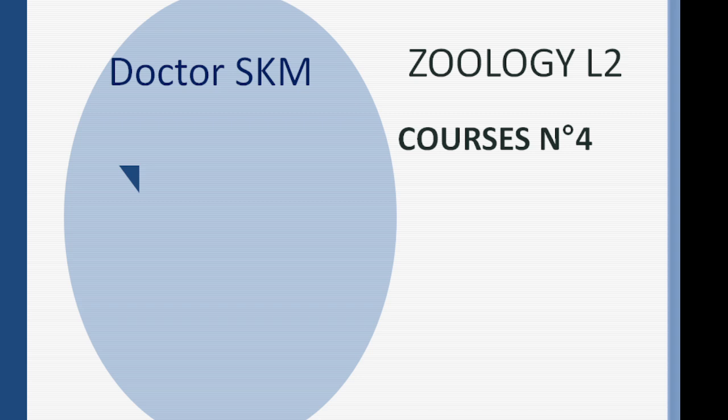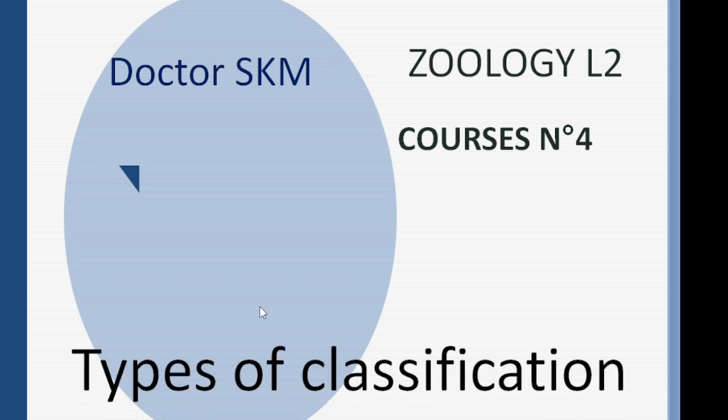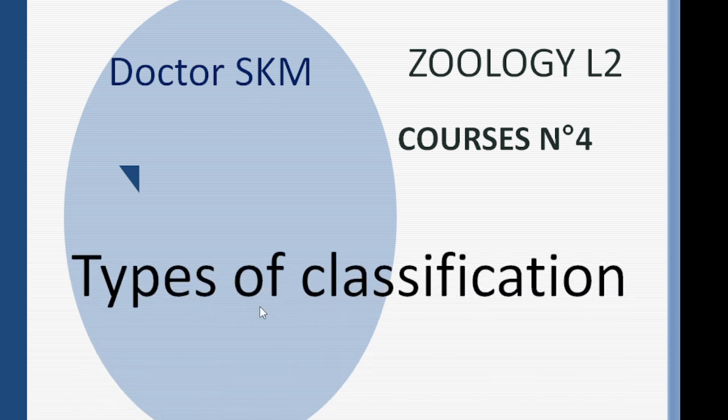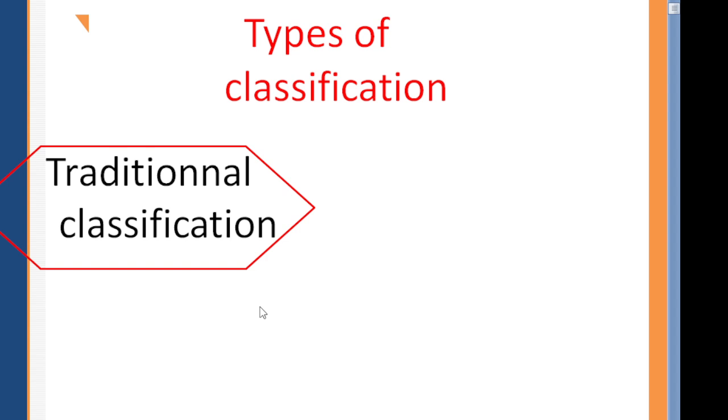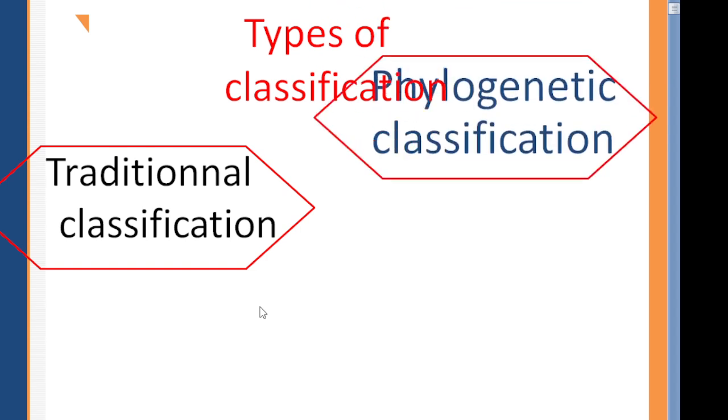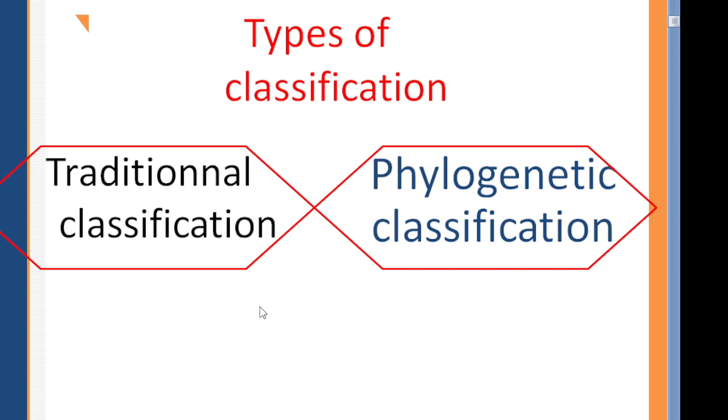Hello everybody, I hope that you are doing well. This is Dr. Eskan. We continue with our series of zoology courses, and today we will talk about the different types of classification. Remember that zoology is the science of classification, and there are two types: the traditional classification and the phylogenetic classification.